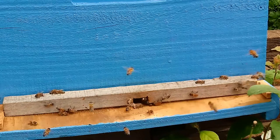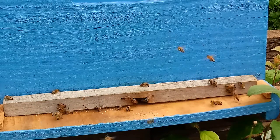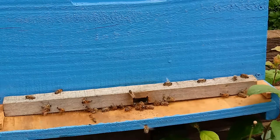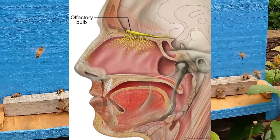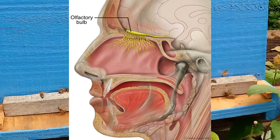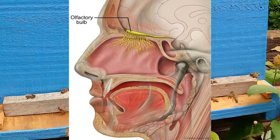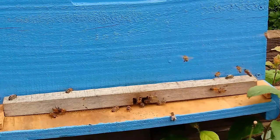The vomeronasal organ sits at the bottom of the nasal septum, somewhere between the mouth and the nose. When this is triggered, it's either from air coming in through the mouth or the nose, and it begins sending a signal to the brain — just the same way a scent, when you breathe it in, can trigger certain memories and similar.